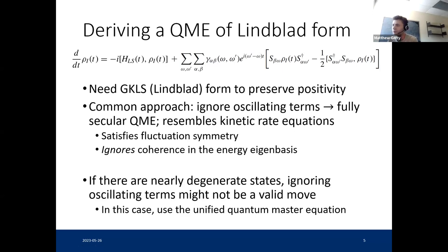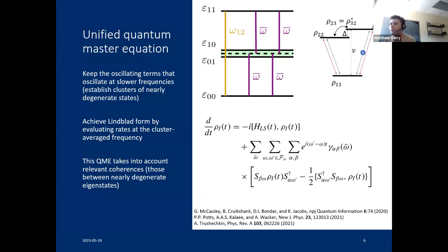Instead, we keep them and we use the quantum master equation that is of Lindblad form, but also can account for coherence. That equation has actually been derived independently a number of different times in the last few years. In one of those derivations, it's referred to as the unified quantum master equation. I've got them all listed here, which is the name that I'm using. What you do is you still throw away the quickly oscillating terms, but you keep the slower ones. You achieve Lindblad form instead by just ignoring the difference between close frequencies when it comes to evaluating the rates. So this QME doesn't completely ignore coherence, it actually describes some coupling between coherences of nearly degenerate states and populations.